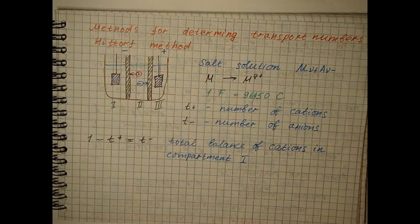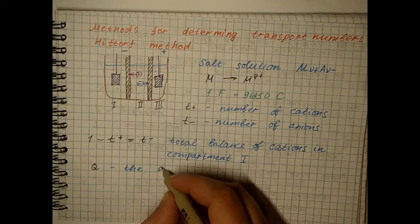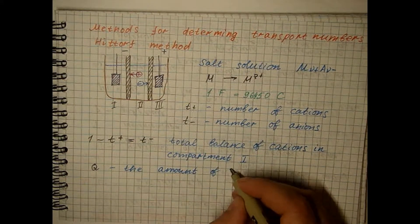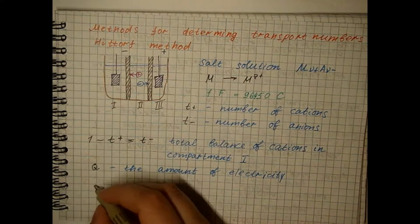If another amount of electricity is passed through the system, then the salt loss in compartment one will be...